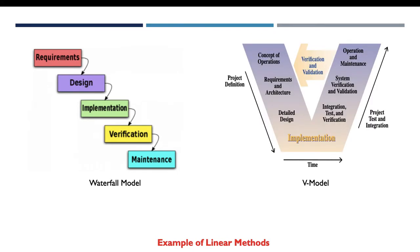Another example of linear methods is the V model. The V model is an extension of the waterfall model and is based on the association of test phases to the corresponding development phases. For each development phase we have a test phase, and at the implementation phase the process steps are bent upwards to form the typical V shape.